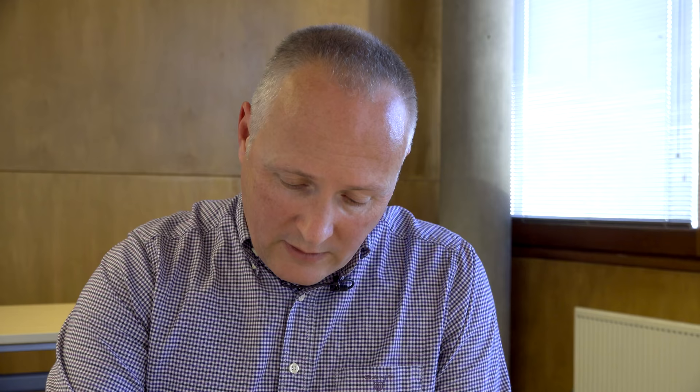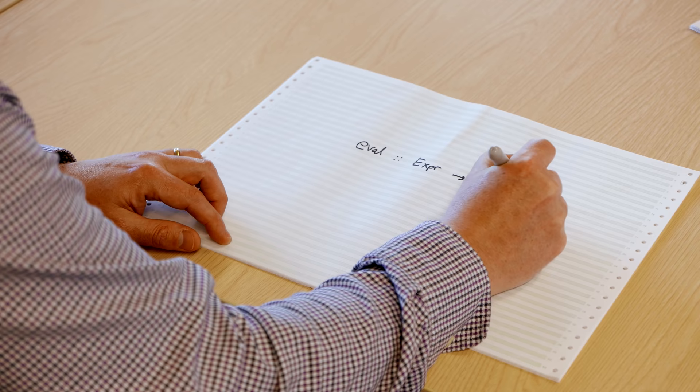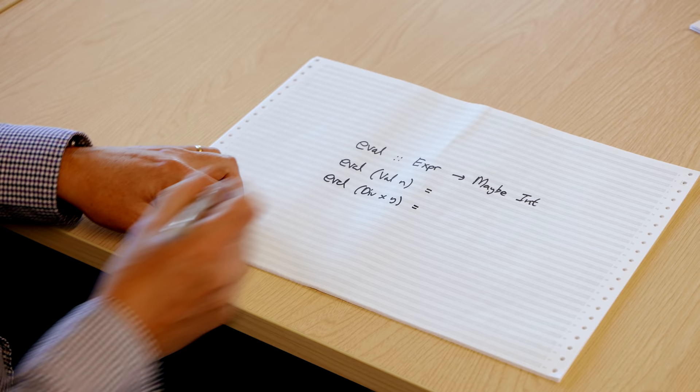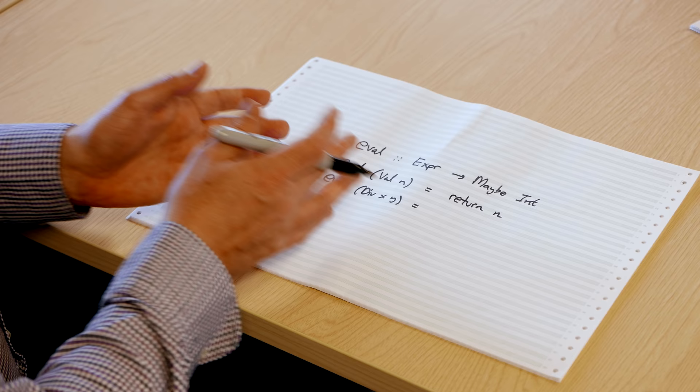Now we can use this definition to make our program simpler. The type of our evaluator remains the same — it takes an expression and gives back a Maybe value. In the base case, rather than writing Just(n) directly, I'm going to abstract that as well and write return(n), where return(x) is defined to be the same as Just(x). So that's our base case.